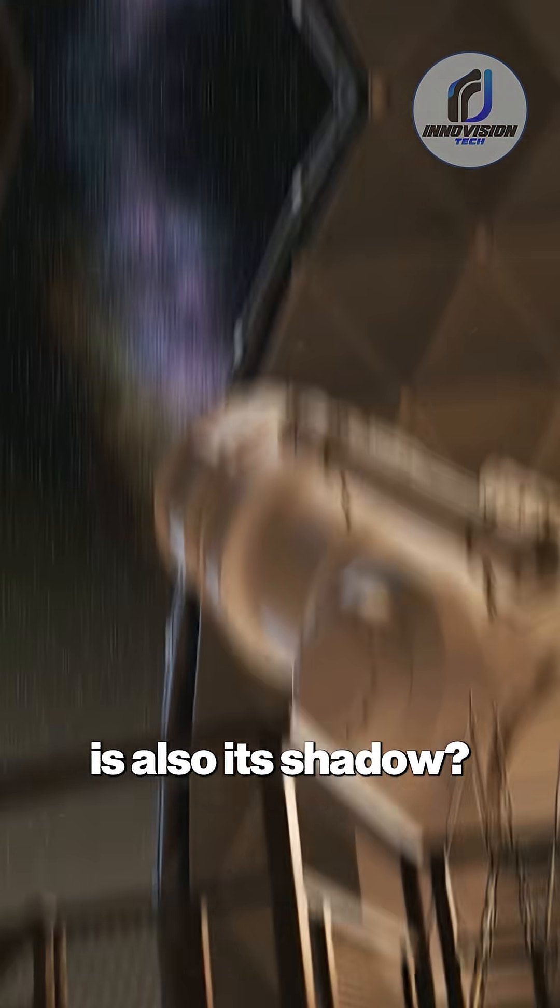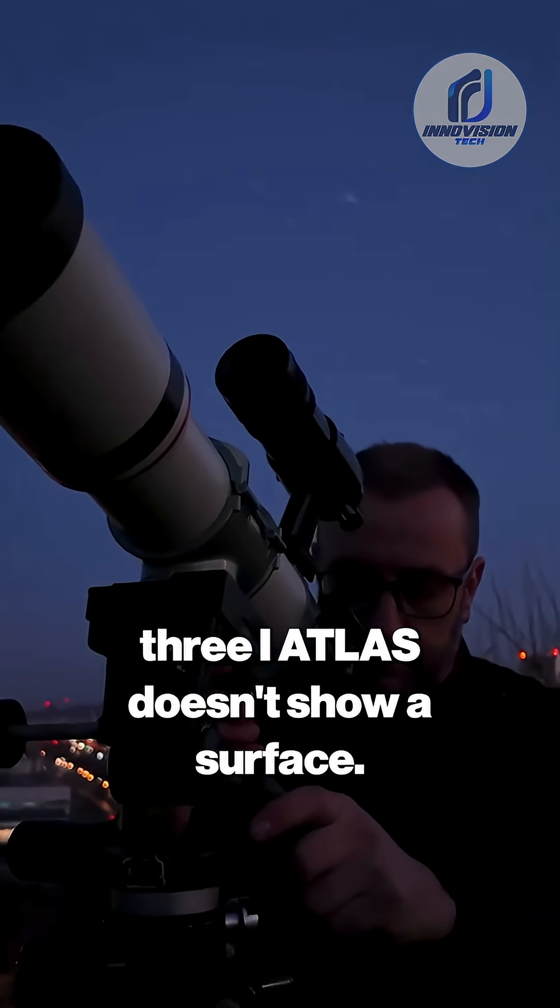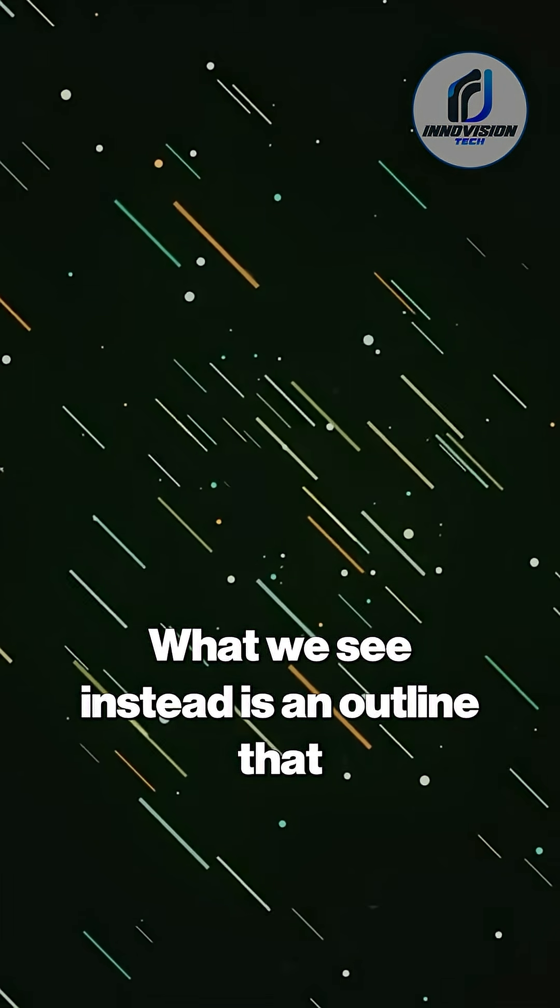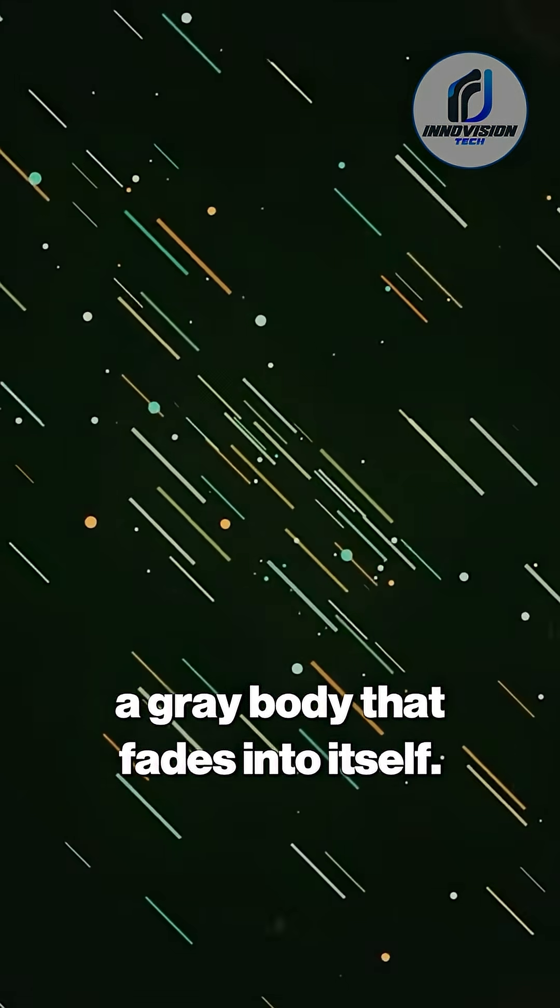What do you do when an object's shape is also its shadow? In the image, 3i Atlas doesn't show a surface, there's no crisp edge, no nucleus shining at the center. What we see instead is an outline that refuses to stay defined, a gray body that fades into itself.